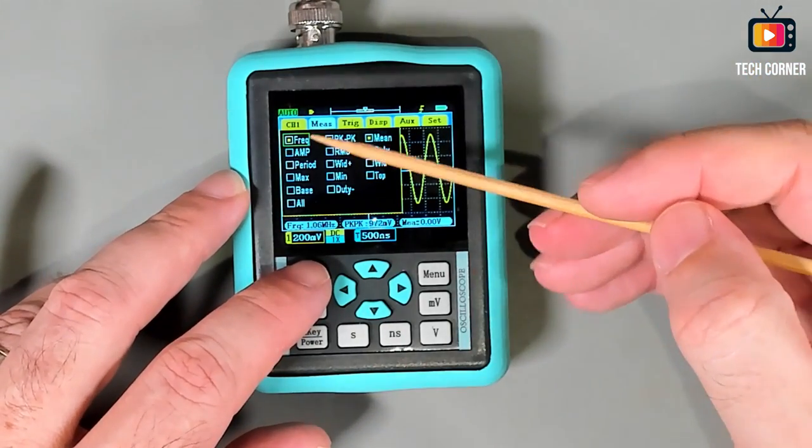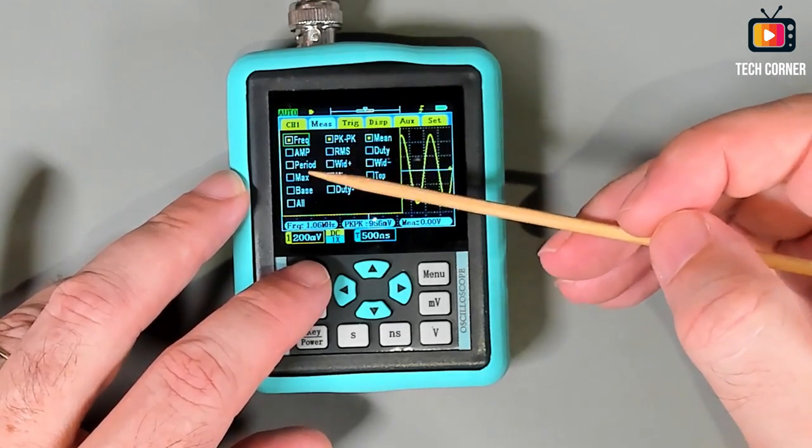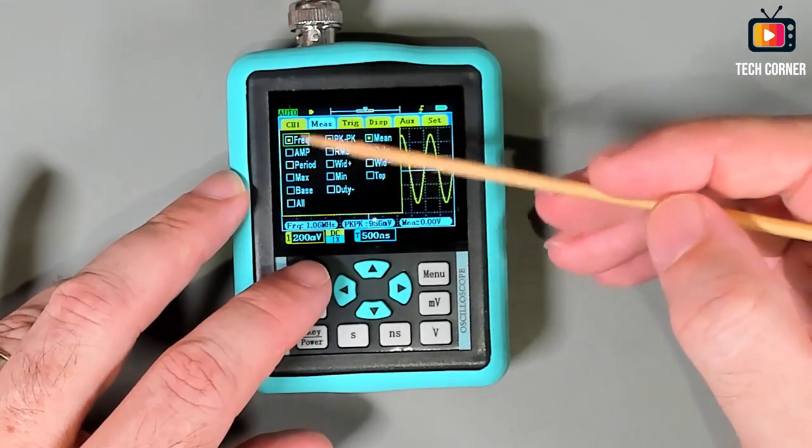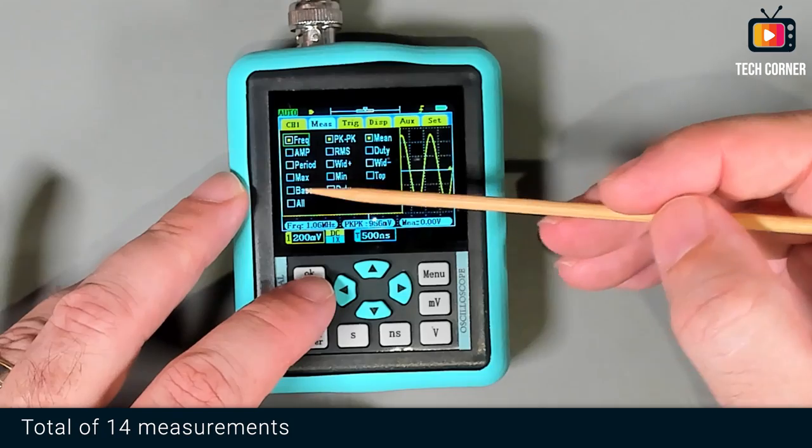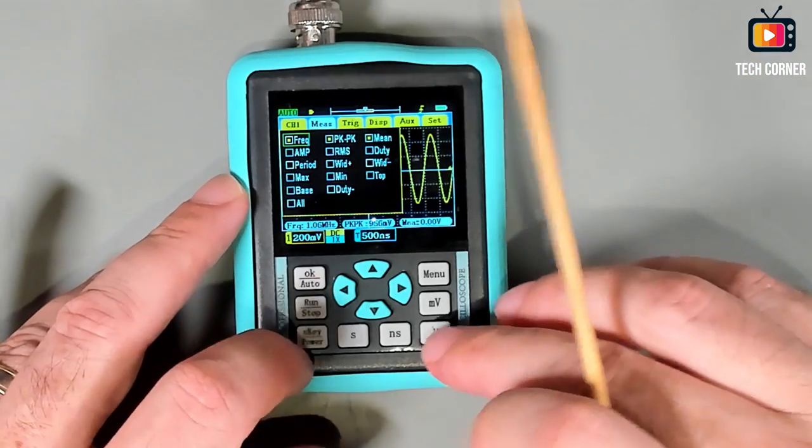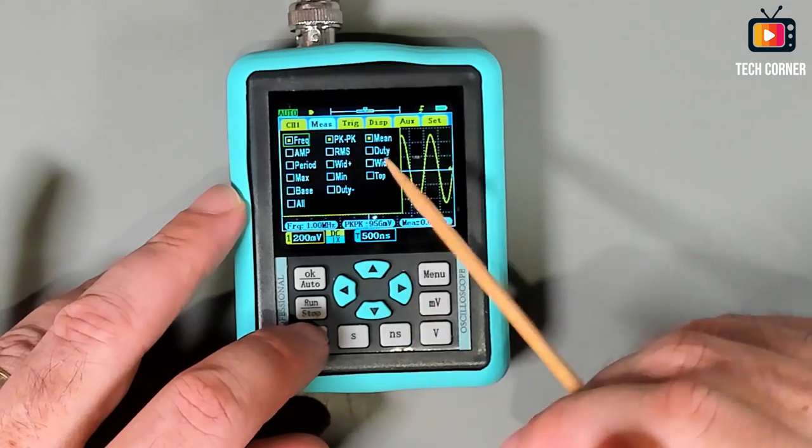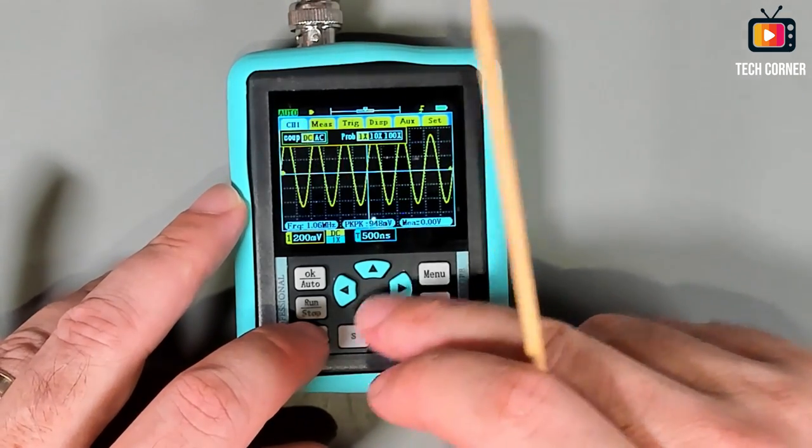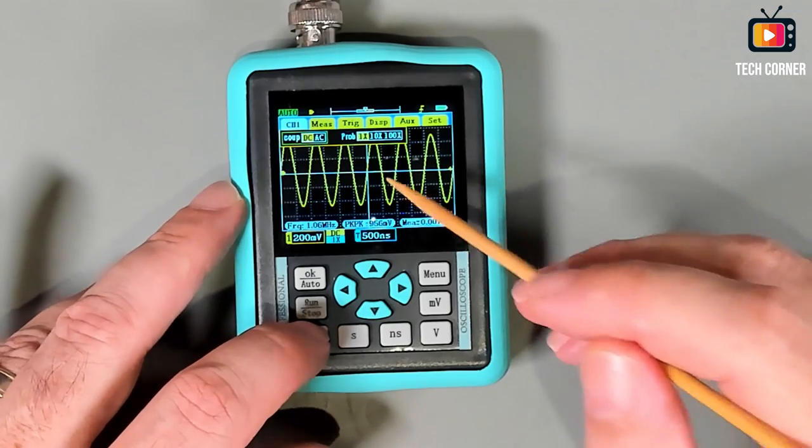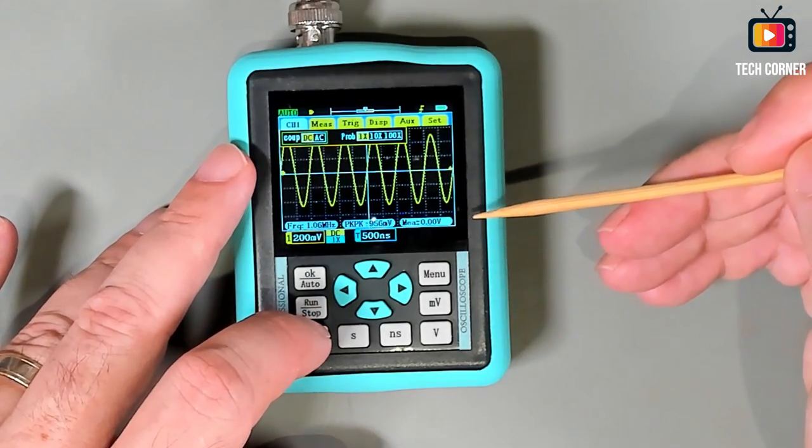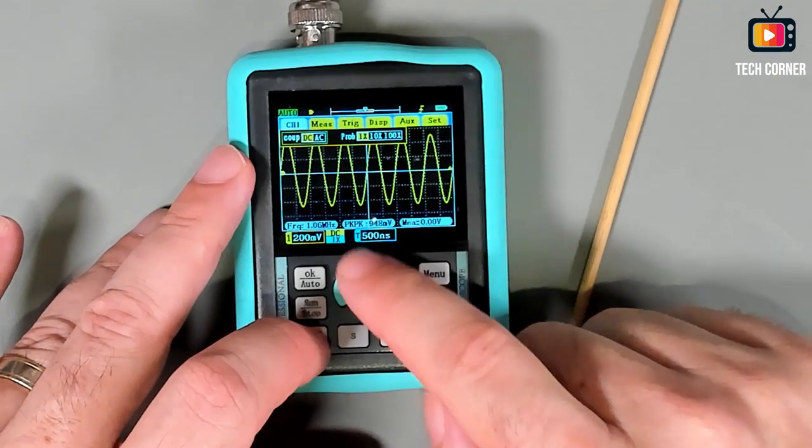This is the measure menu. You have a lot of options to select: frequency, peak to peak, the mean or average and periods. Everything is mixed up, you have the time measurements and the voltage measurements all together. One cool thing is when you press the keys, you will update the menu with the options that you just used. This one is working perfectly.